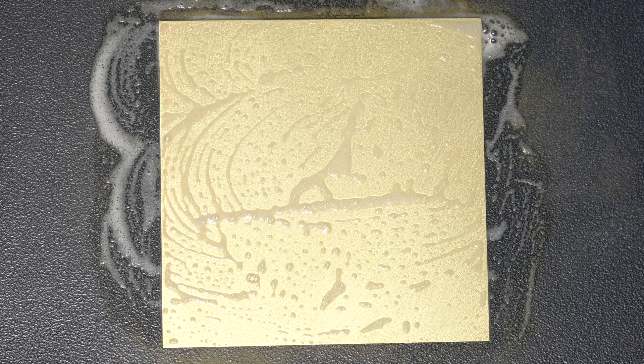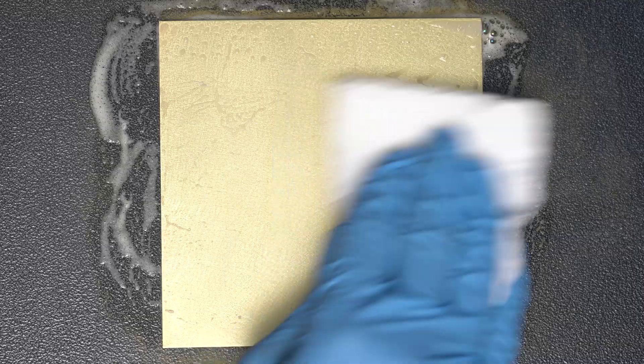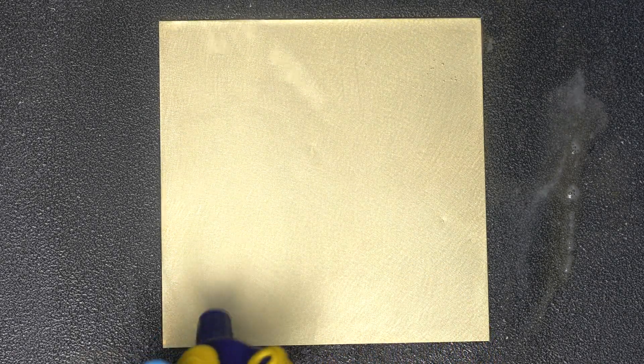Once the part is cleaned, use paper towels to absorb the cleaner off the brass surface. Follow up with a thorough rinsing with water. For large parts you can use a hose, spray bottles, or even a dedicated paint gun filled with water.